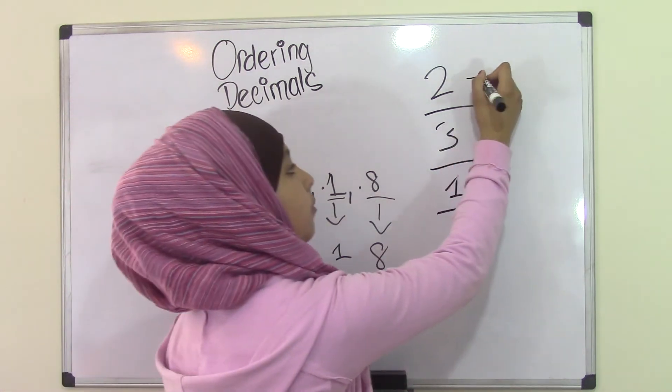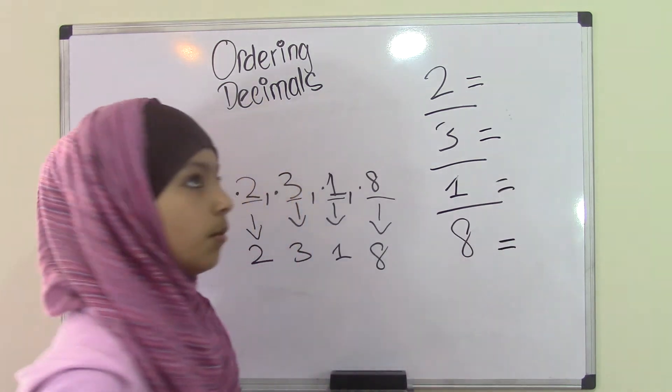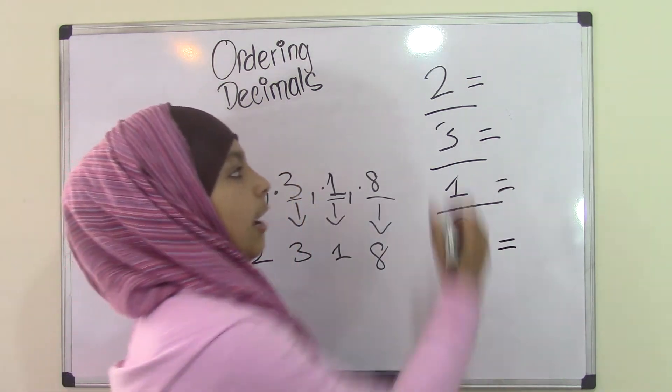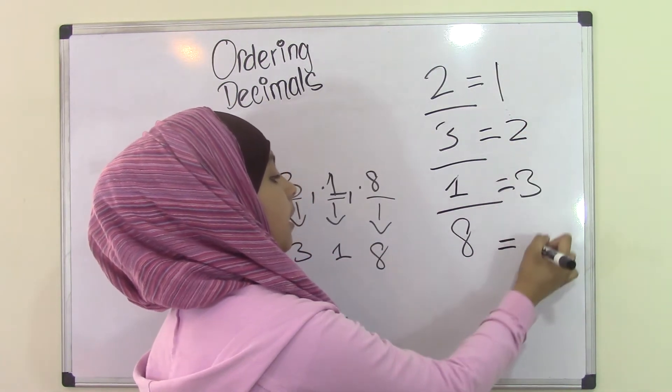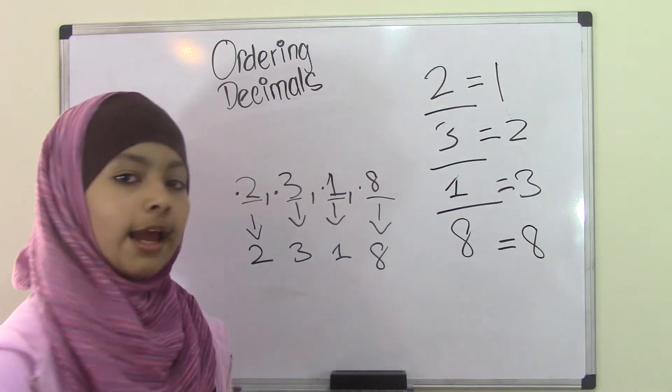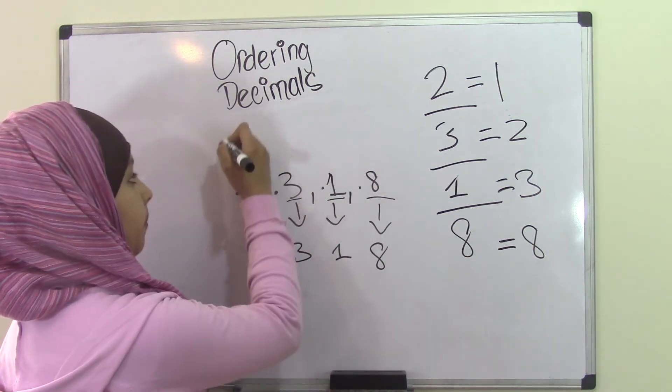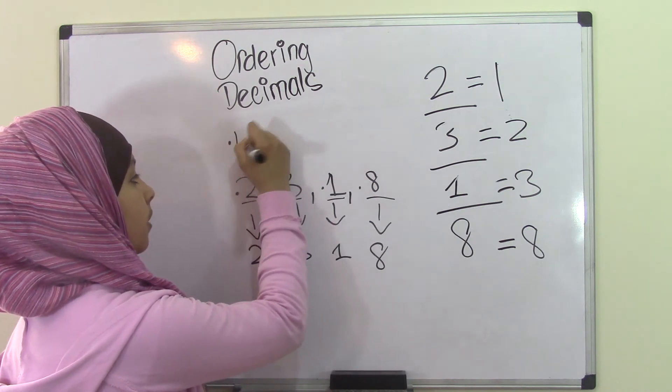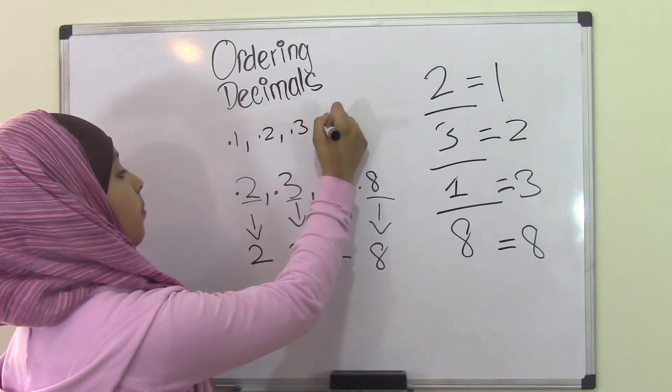Now we'll put equal signs to put this in least to greatest order. We all know that 1 holds the least place value, then 2, then 3, then 8. Now we'll put these back in horizontal form. So this will become 0.1, 0.2, 0.3, and 0.8.